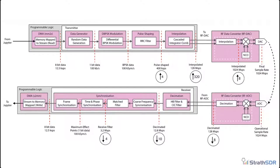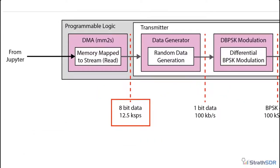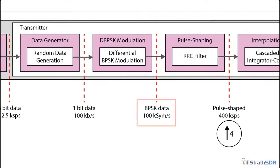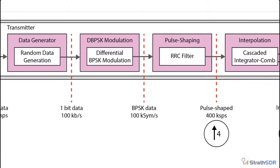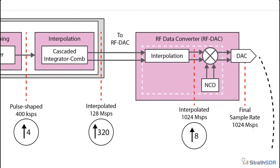Now shown on screen is our radio system design with sample rate annotations. The user will transmit bytes of data at a rate of 12.5 ks per second. As we are using BPSK modulation, we can only modulate one bit at a time, so bytes must be serialized into bits before modulation. This results in a BPSK symbol rate of 100 ks per second and a signal bandwidth of 100 kHz at baseband. After several interpolation stages, the system achieves an overall sample rate of 1024 ms per second.